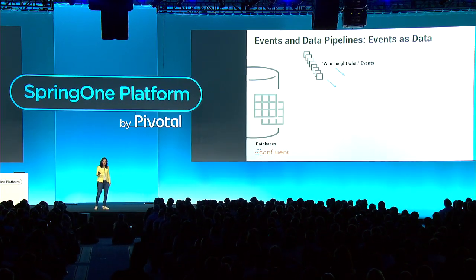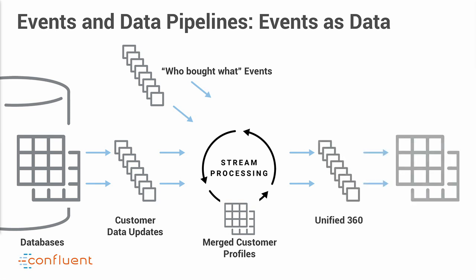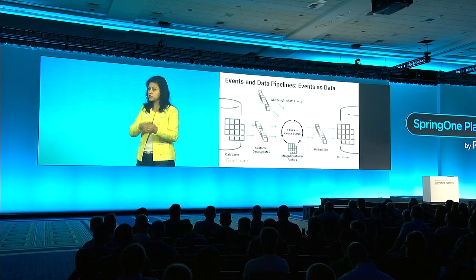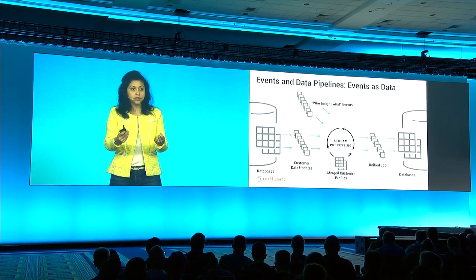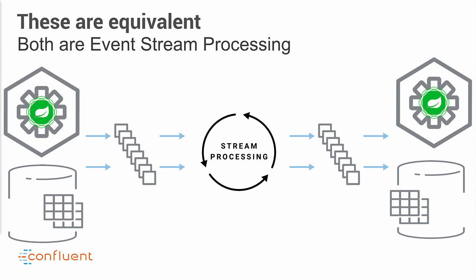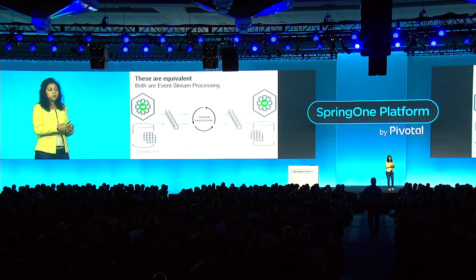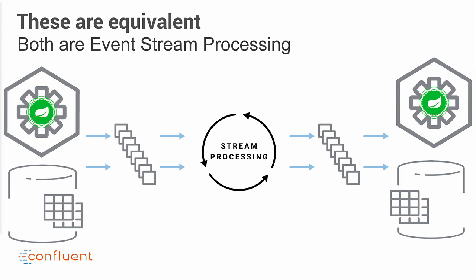Event streams also take another form: data pipelines. Take the same sales event stream, but now glean customer buying preferences from the 'who bought what' stream. Join it with the changelog from your customer database to create a unified customer 360-degree profile, then store it downstream in a Cassandra data store continuously. Notice this looks much less like microservices and more like a data transformation or ETL pipeline. But both are equivalent — in both cases you're taking event streams, joining with possible tables of data, and creating new streams of events. The ability to combine data inside your applications and your data systems together is what makes event-driven architecture so powerful.